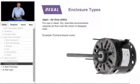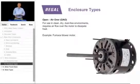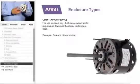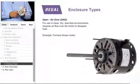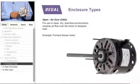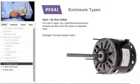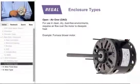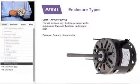The first type of enclosure is an open air over, or OAO, construction. There will typically be holes in the end frames or end shields and in the shell of the motor. This is used in a typically clean, dry, dust-free environment — a typical furnace blower motor.